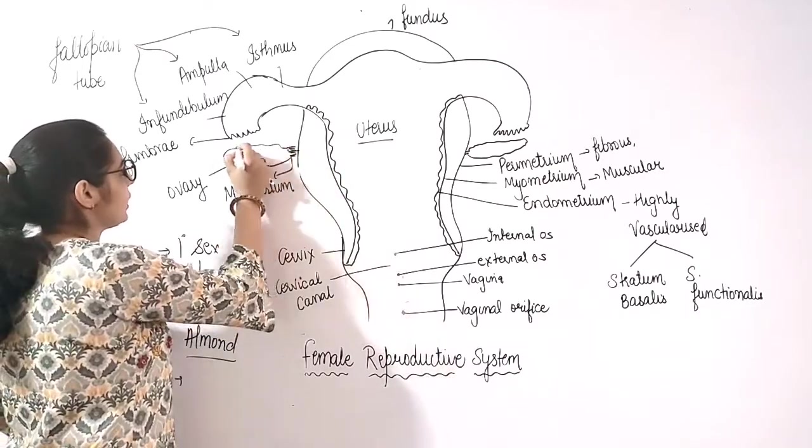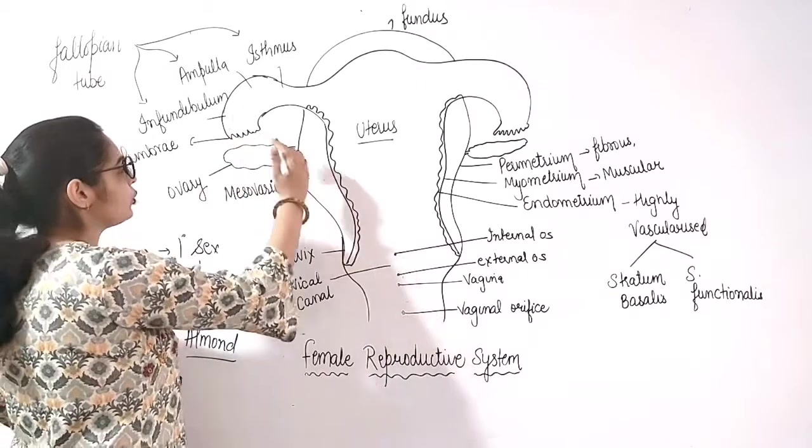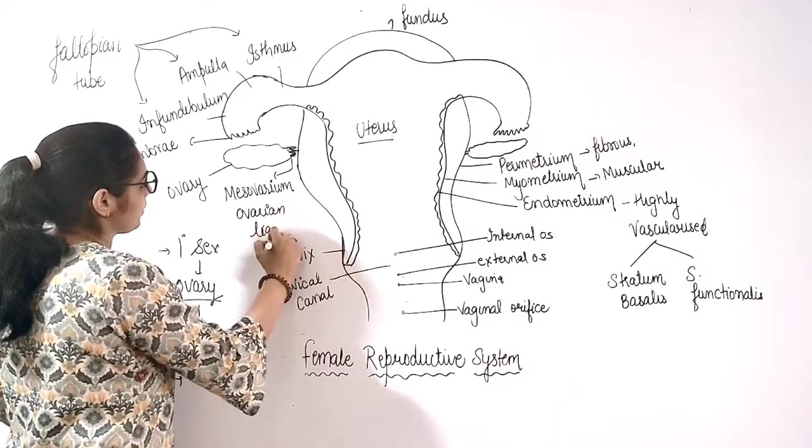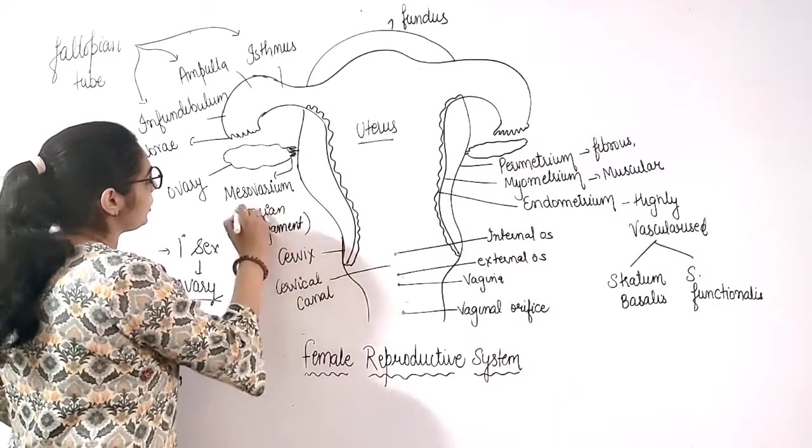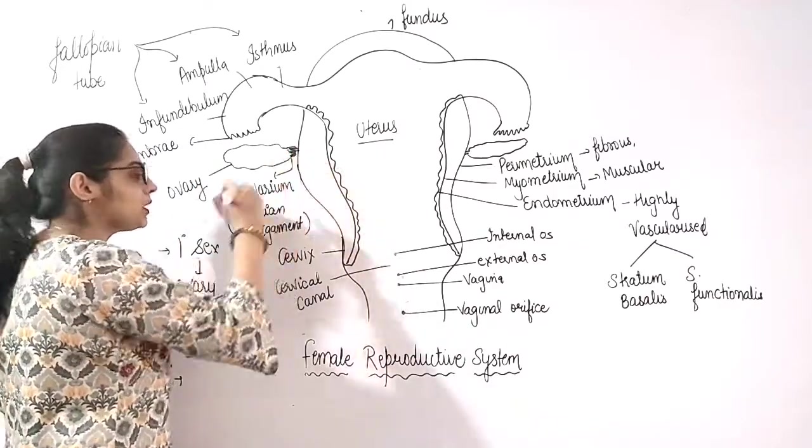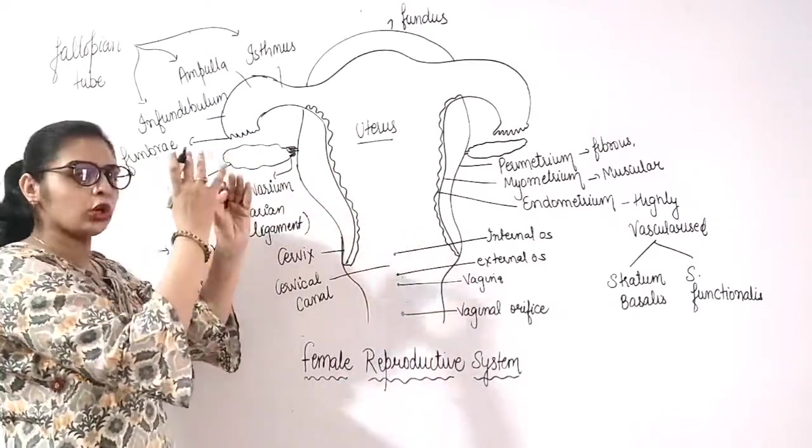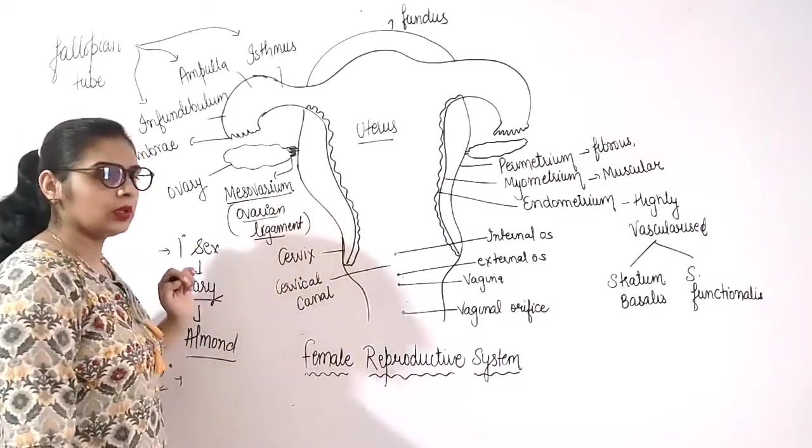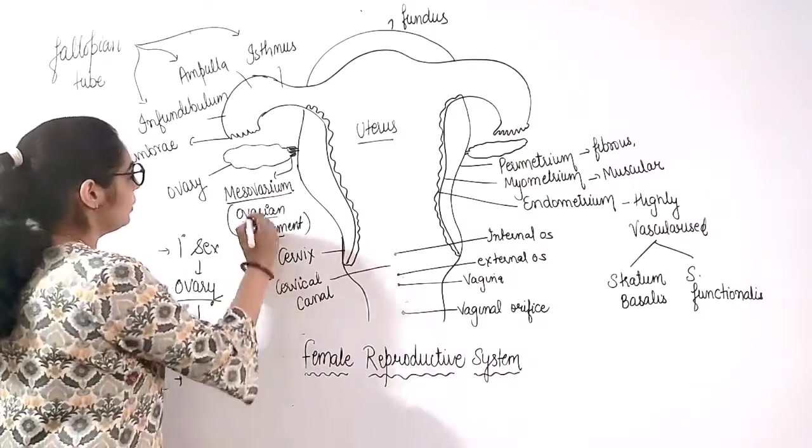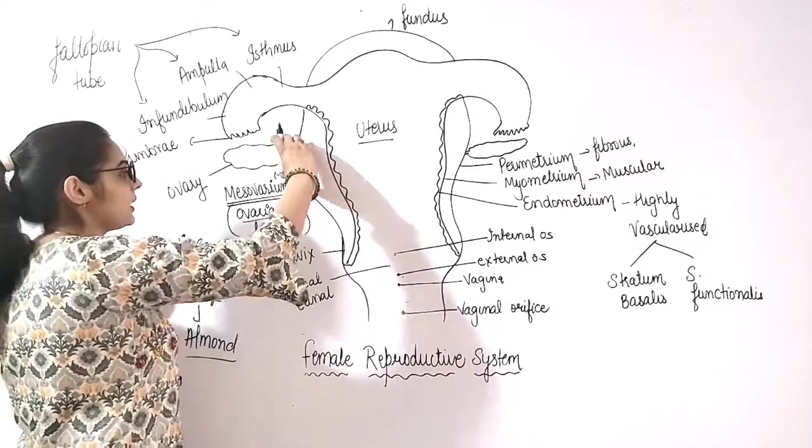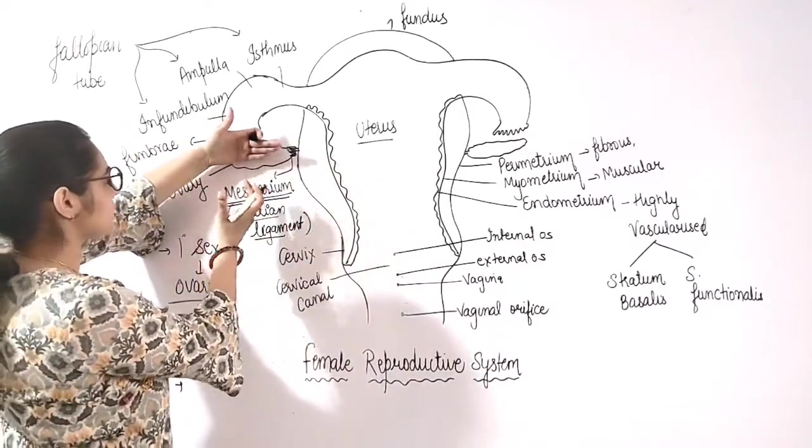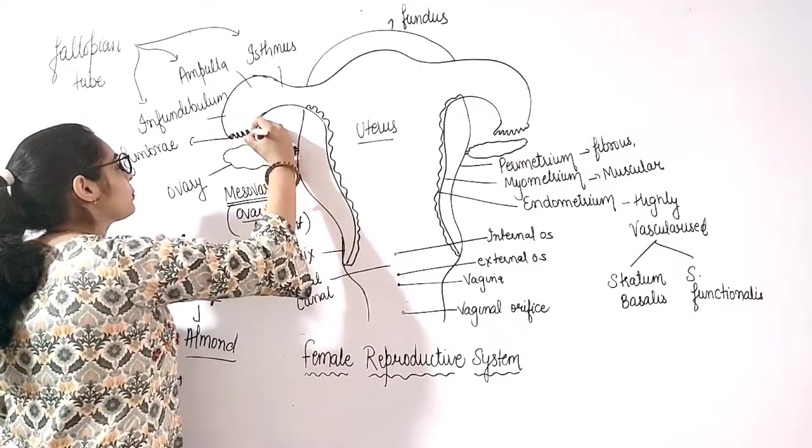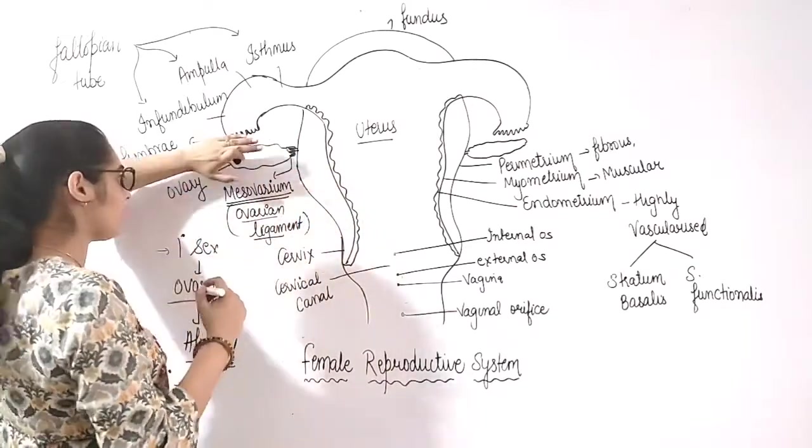Ovary is present in the pelvic region and the ovary is attached to the uterus with the help of ovarian ligaments. And these ovarian ligaments are known as mesovarium. What is mesovarium? Mesovarium is the ligaments that are present in a mesentery. Because it is related to pelvic region and it is attached to the uterus.